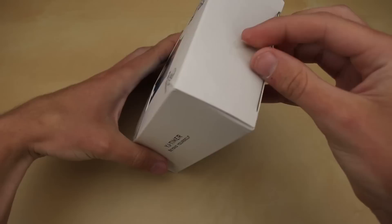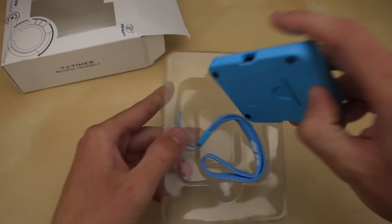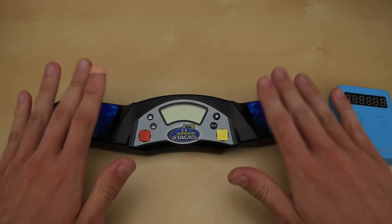This is the YJ pocket cube timer. Basically it's a portable little cubing timer that doesn't actually require you to touch it to start and stop your solves, which basically allows it to be a lot smaller. As compared to a giant stack mat timer, you don't need these giant things sticking out to stick your hands on.